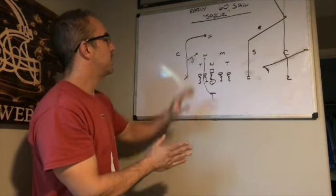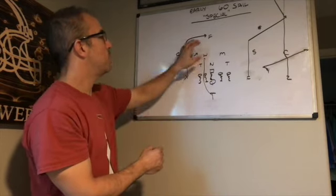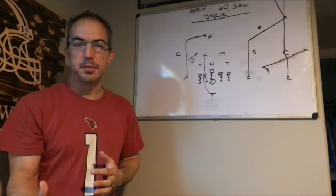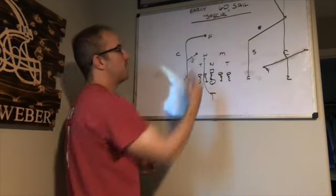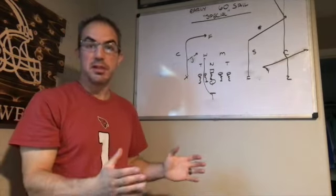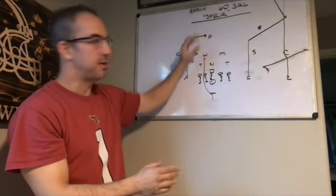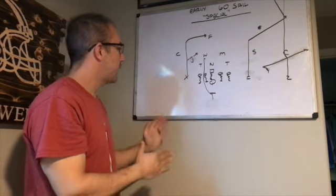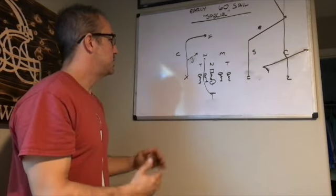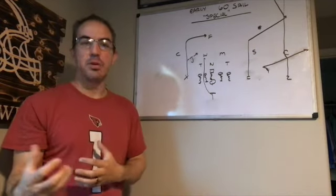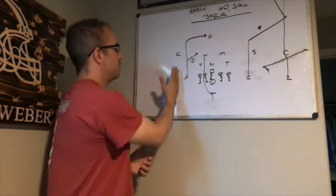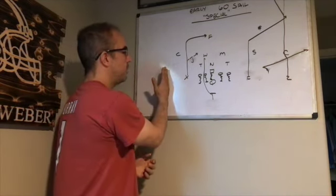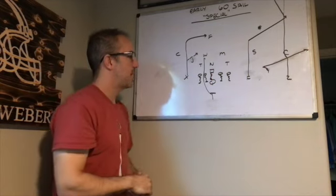That's good because what we want to do on the backside of sale, which is always some sort of levels concept, is we want to attack this safety and occupy the backside safety. Or if it's single high we want to occupy the single safety. The reason why we line our X in a condensed split is we want to treat him like a slot receiver in this case for that reason to attack the safety.